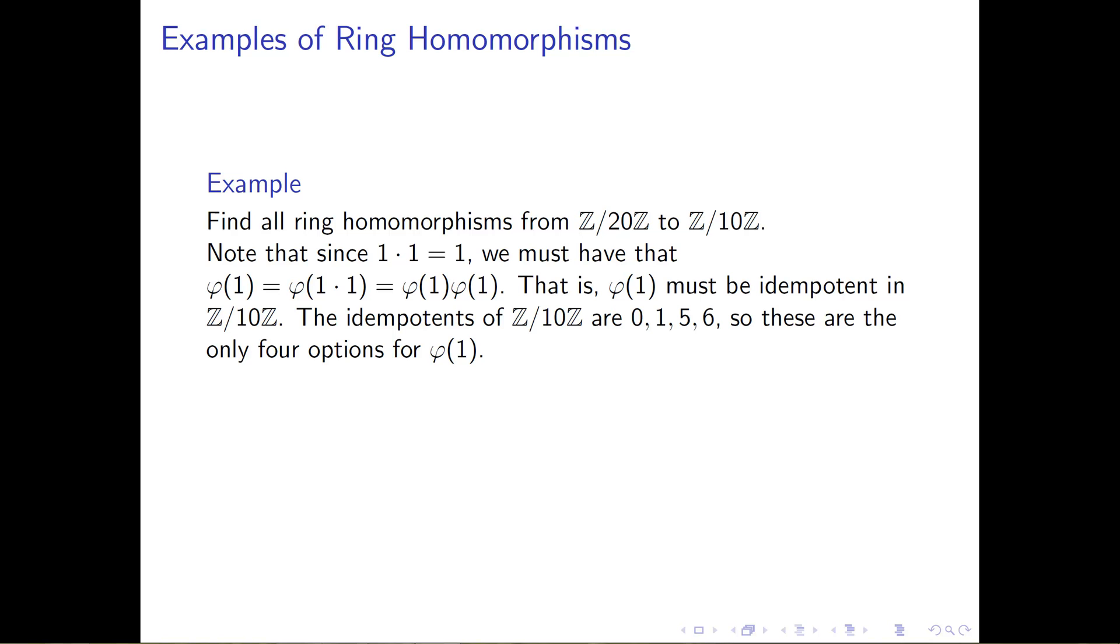If we apply φ to that property, then we see that what φ of 1 must be equal to is φ of the quantity 1 times 1. And since φ is a ring homomorphism, or if we want to build φ to be a ring homomorphism, we need to be able to pull that multiplication outside of the parentheses that we have.